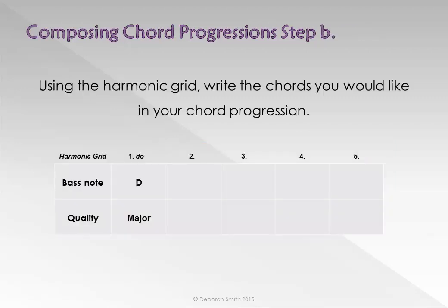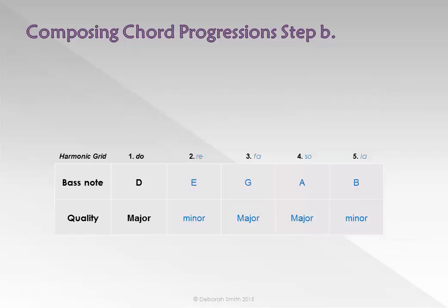Using the harmonic grid, write the chords you would like in your chord progression. Think about the way the bass notes move to create a smooth progression. Also make sure your last two chords create a standard cadence. In this case I have used chords five to six, creating an interrupted cadence.